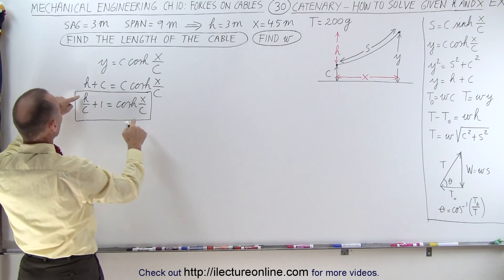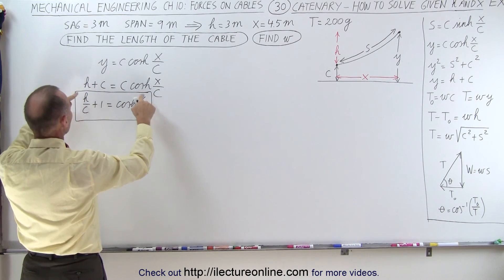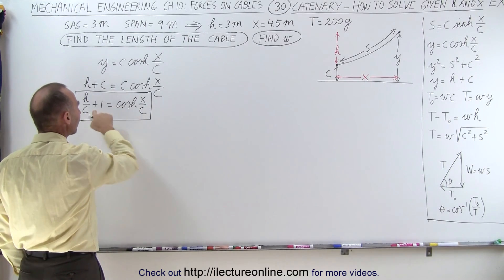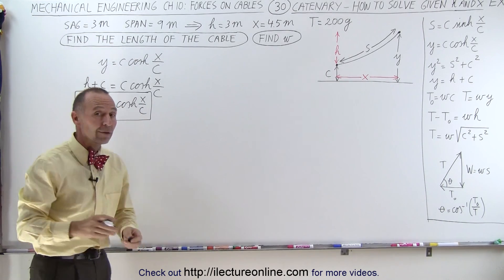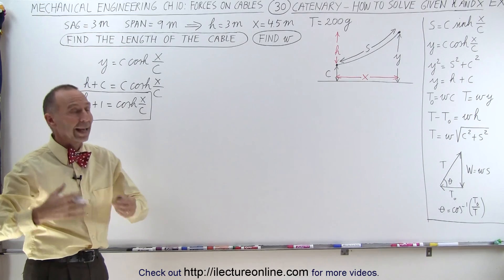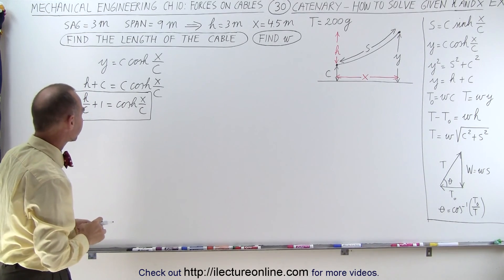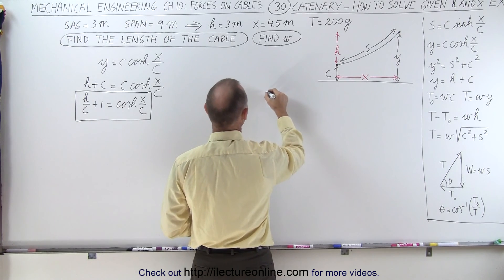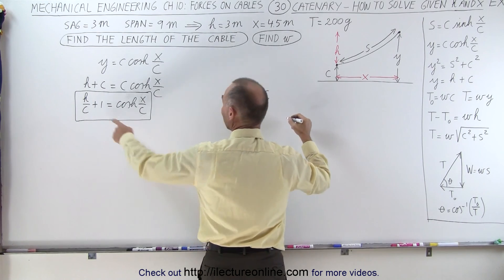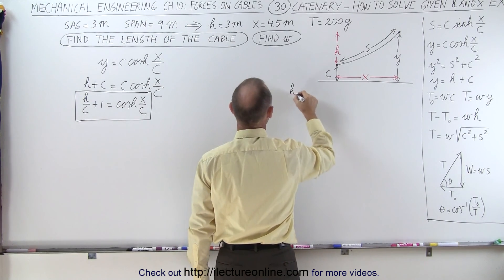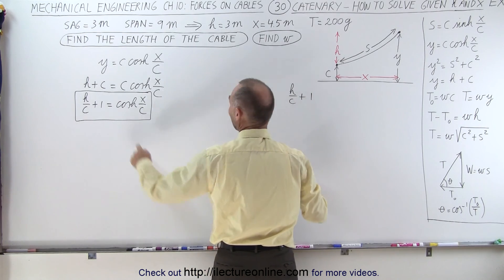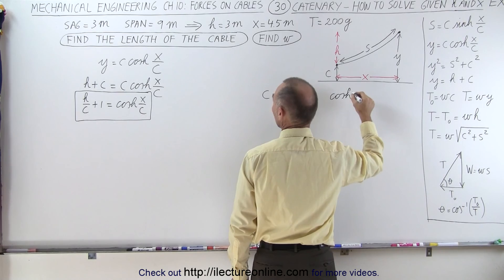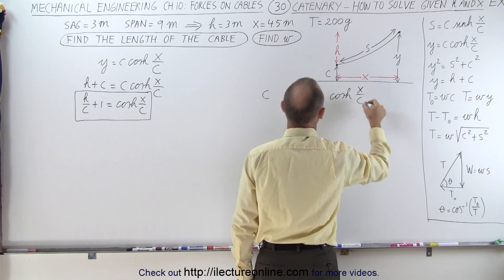In this equation we know both H and X, but we don't know C. We're going to use the method of iteration to find C, so we can then find Y, S, and everything else we're looking for. We'll put in estimated values for C, calculate H over C plus 1, and then calculate the hyperbolic cosine of X over C.